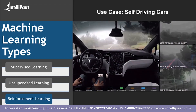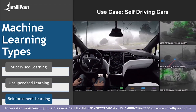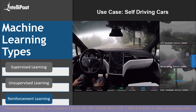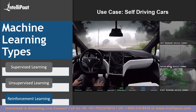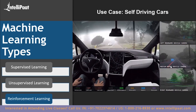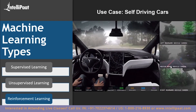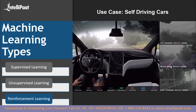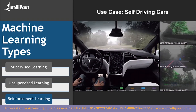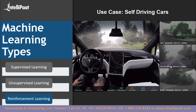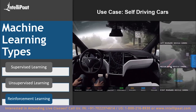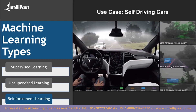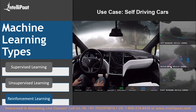Self-driving cars mainly rely on three technologies: IoT sensors, IoT connectivity, and software algorithms. There are many types of sensors available — for example, sensors for blind spot monitoring, forward collision warning, radar, and so on. All of these IoT sensors work together to help in the navigation of the self-driving car.